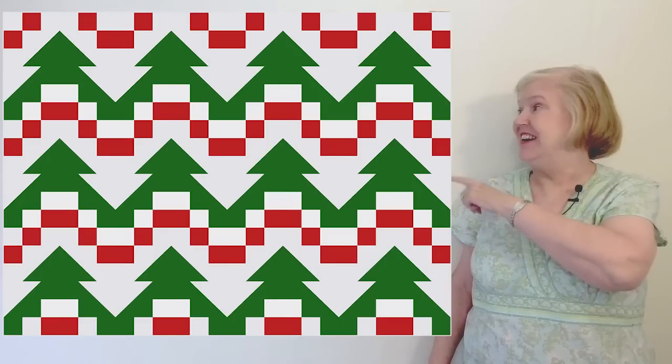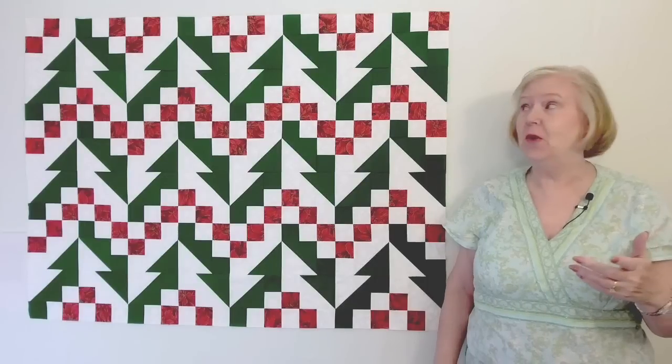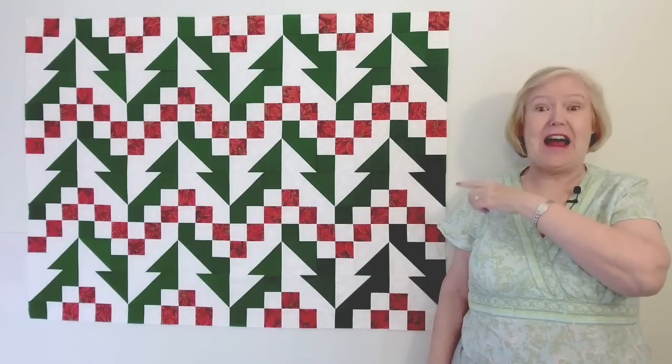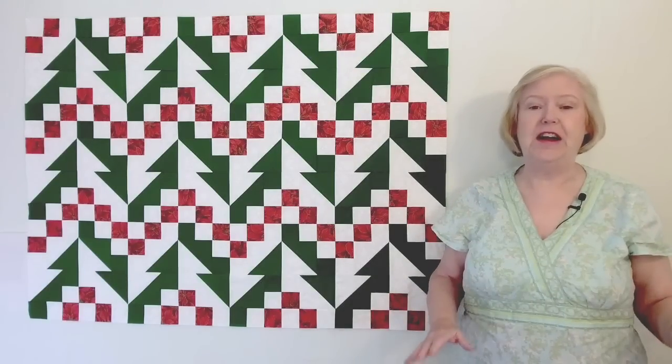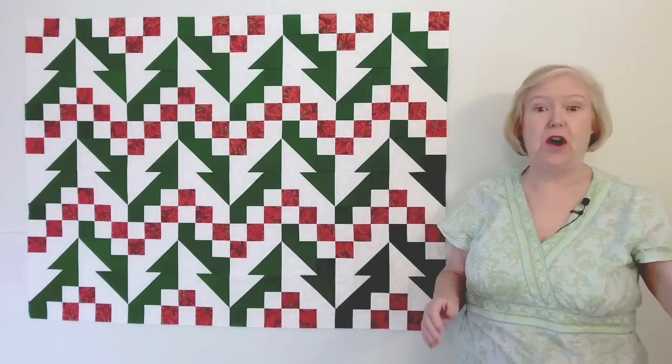The first version is this one, and as you can see, it's got solid green trees with the red stripe at the bottom. Version number two is this one, where the trees are half green and half white. It's a fun, easy quilt, can be made with five inch charms if you like, or yardage.